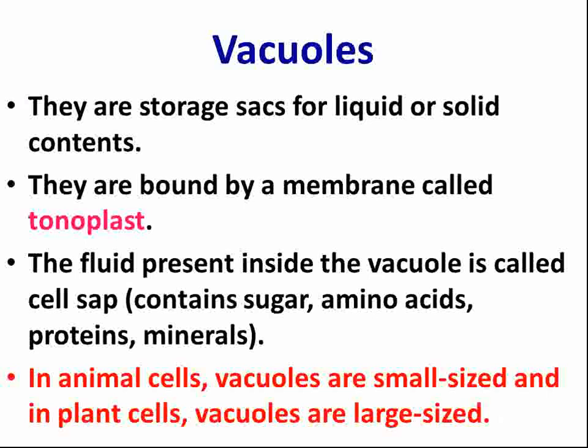The next cell organelle is vacuoles. Vacuoles are storage sacs for liquid or solid contents — sac-like structures containing either liquid or solid content. They are bound by a membrane called the tonoplast. There is also a fluid present inside the vacuole called cell sap.